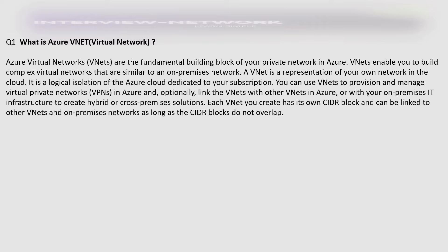Azure VNet is the fundamental building block of your private network in Azure. VNet enables you to build complex virtual networks that are similar to on-premises networks. A VNet is a representation of your own network in the cloud — a logical isolation of the Azure cloud dedicated to your subscription. Each VNet you create has its own CIDR block and can be linked to other VNets and on-premises networks as long as the CIDR blocks do not overlap.